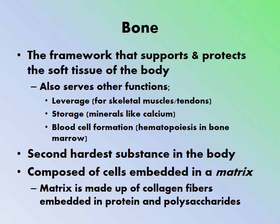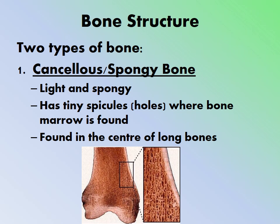Bone is the second hardest substance in the body, the first being the enamel on your teeth. Bone is composed of cells embedded in a matrix — think of jello with fruit suspended in it, where the fruit represents cells and the jello is the matrix. The matrix is made up of collagen fibers embedded in protein and polysaccharides.